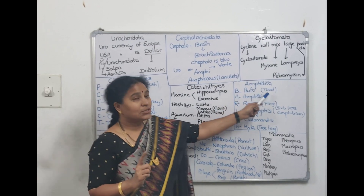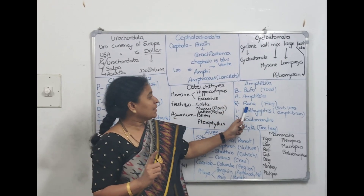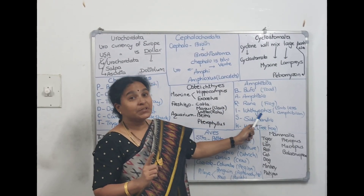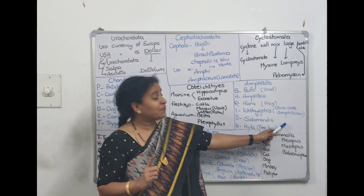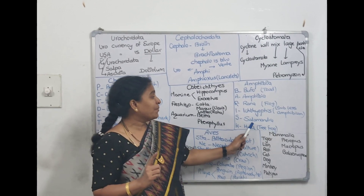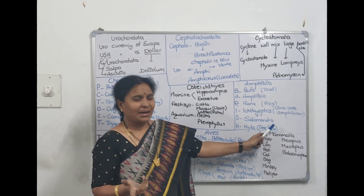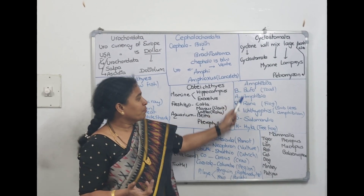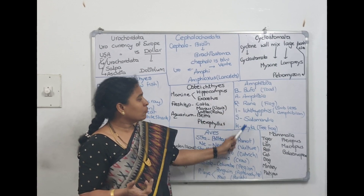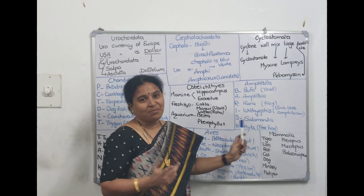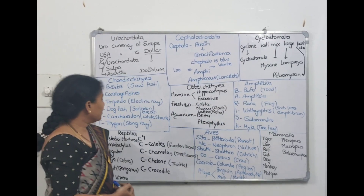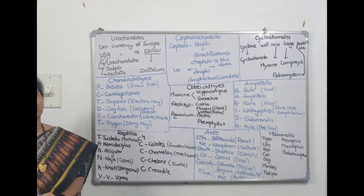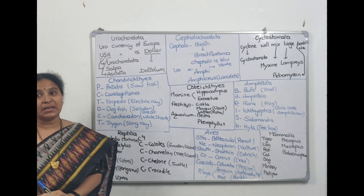Bufo means toad, Rana means frog, Ichthyophis is a limbless amphibian, Salamandra means salamander, and Hyla is tree frog. So BARISH is the code for Amphibians.